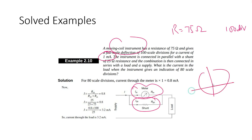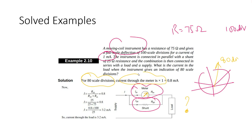We are asked what current flows in the load when the instrument gives an indication of 80 divisions out of 100. There is a shunt resistor Rsh connected in parallel. To find the answer, we calculate the current per division and multiply by 80.